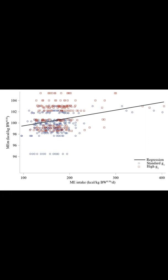We can understand the concept of Residual Heat Production by looking at this graph from my paper called 'Architecture of Broiler Breeder Energy Partitioning Models,' published in Poultry Science in 2022. The graph shows the relationship between total heat production on the y-axis and metabolizable energy intake on the x-axis. The residuals of this regression are called Residual Heat Production (RHP), also referred to as residual maintenance requirement.